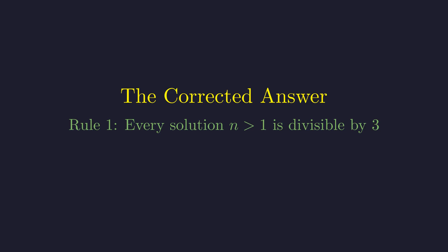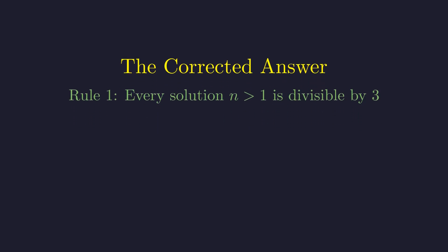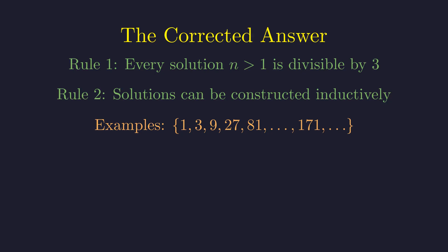Let's state the complete corrected solution with the mathematical precision it deserves. First rule. Every solution greater than 1 must be divisible by 3. This makes 3 the universal foundation. Second rule. From any solution, we can construct infinitely many others by attaching new prime factors from the corresponding power of 2 plus 1. The solution set includes 1, the powers of 3, and infinitely many composite numbers like 171 and beyond.